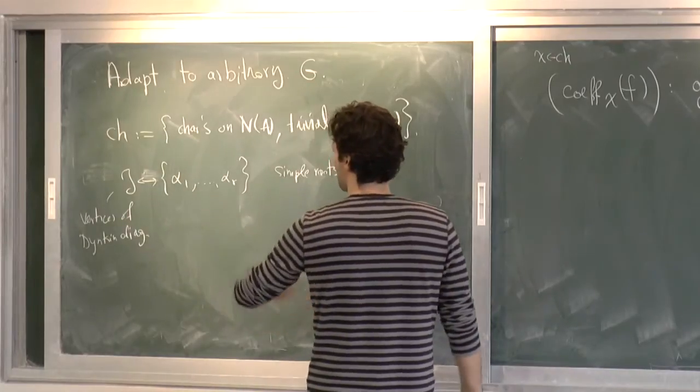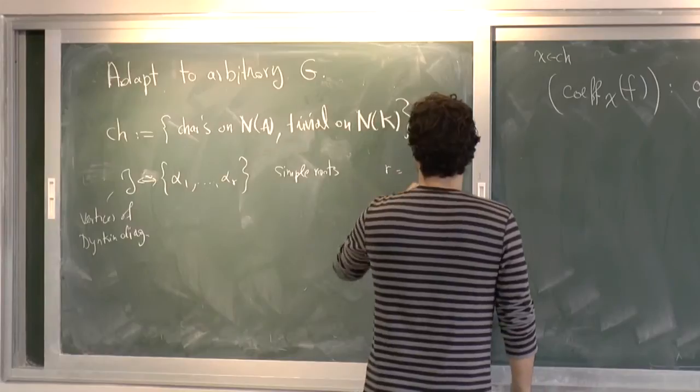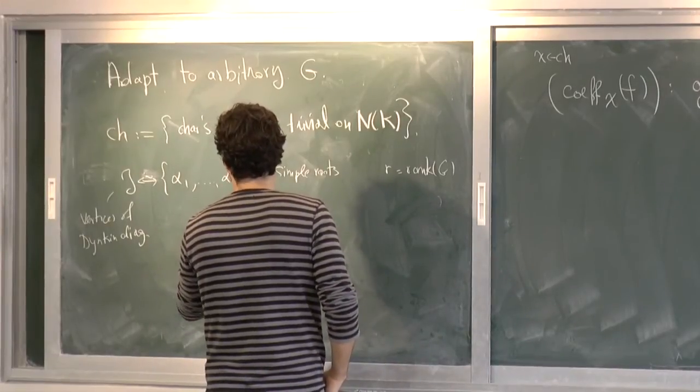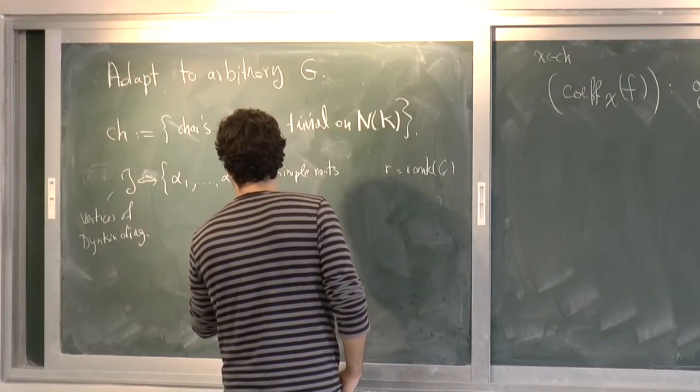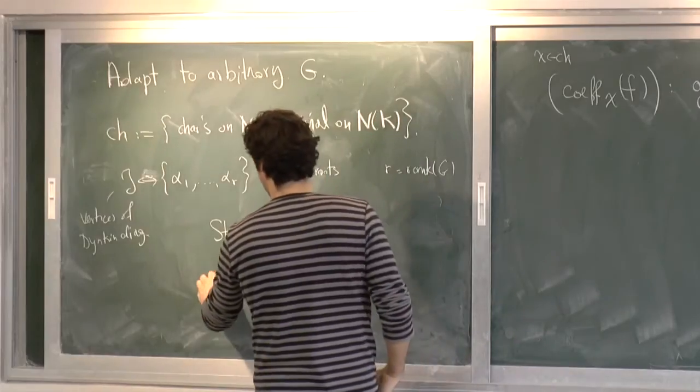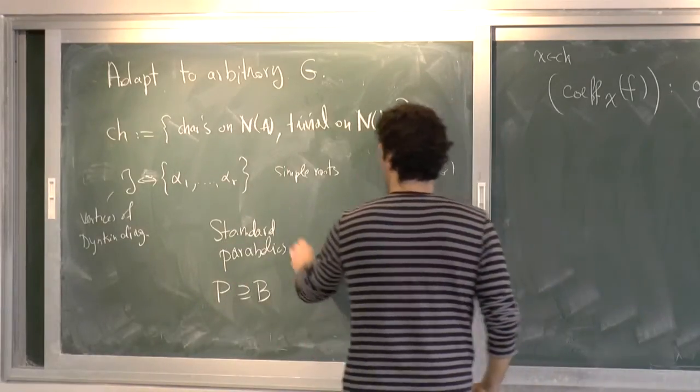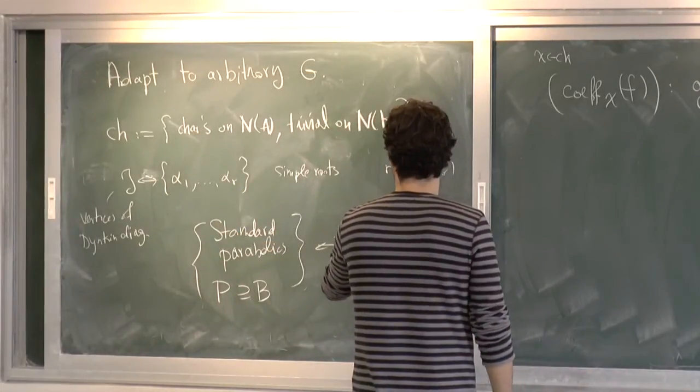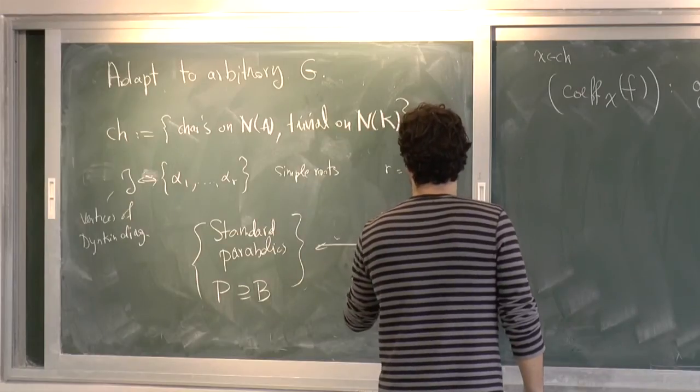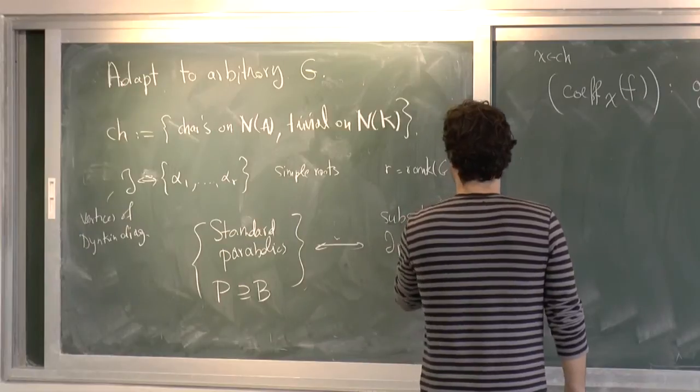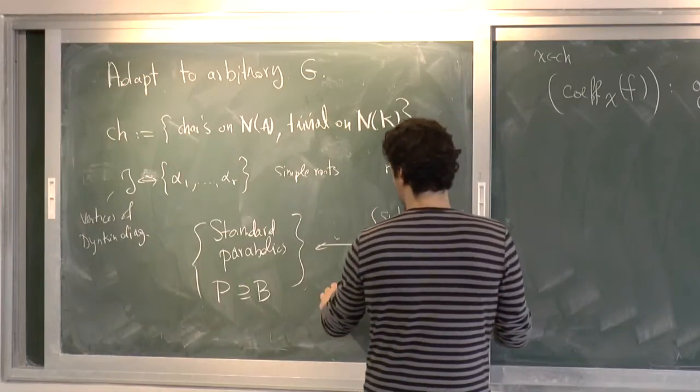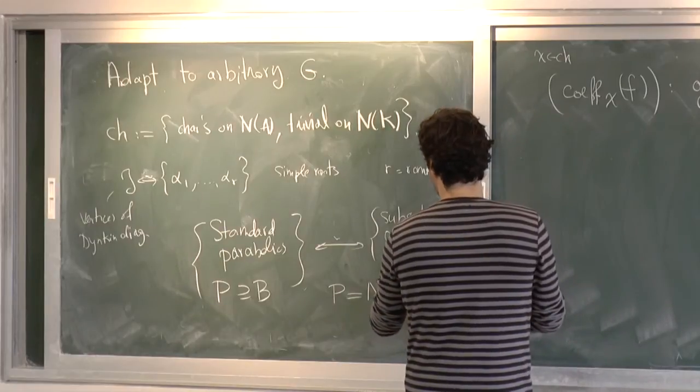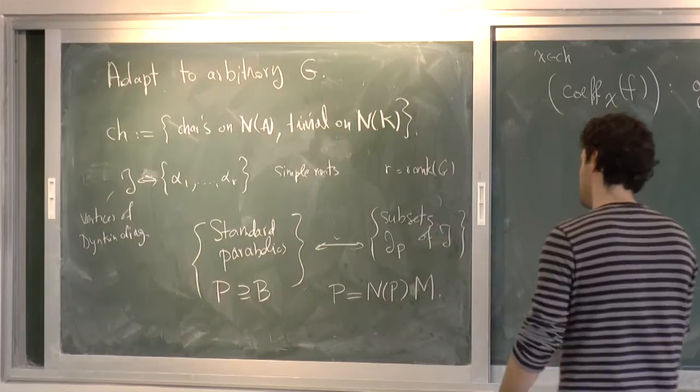Or vertices of the Dynkin diagram. So then R is the semi-simple rank, rank of G. What else do I have? I have a second. I can look at standard parabolics. So those are the parabolic subgroups of G that are contained in my fixed Borel subgroup. And those are, again, in bijection with the subsets of this guy. So subsets of I, lower P of I. And then also, the notation I need is parabolic has a Levi decomposition into the product of its unipotent radical and its Levi. So let's Levi decomposition.